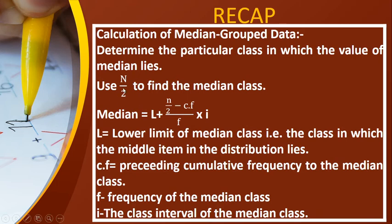So now for a formula recap with regard to continuous series of median. N by 2 is found out. Median is L plus n by 2 minus CF by F into I. L is the lower limit of the median class. CF is the preceding cumulative frequency. F is the frequency of the median class. And I is the size of the median class.